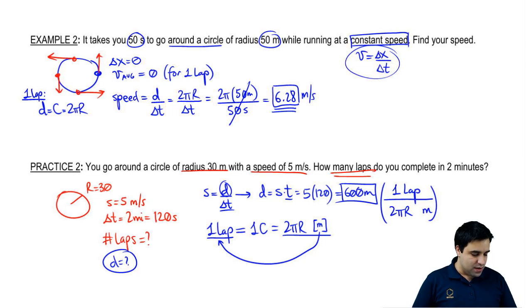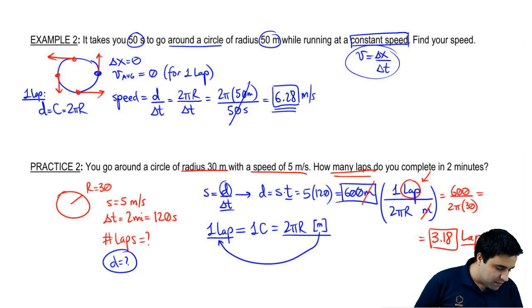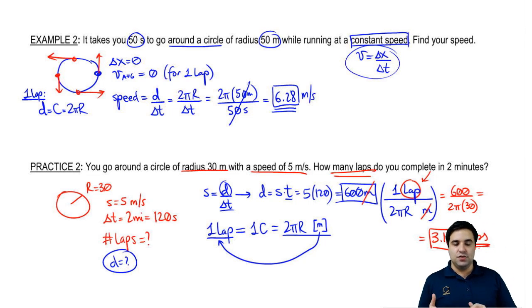And then this m here cancels with this m. And I'm left with laps. So this is going to be 600 divided by 2 pi 30. And if you put this in the calculator, you get 3.18, and that has units of laps. 3.18 laps. So that's how you do that.